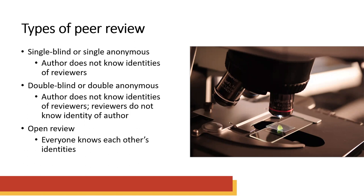The last model we'll mention is open review, which can mean a lot of different things — there doesn't appear to be any consensus on the definition yet. It often refers to a process where the author and reviewer are aware of each other's identities, or it may involve transparent review where reviewer feedback is shared alongside the final published version, or collaborative review among reviewers or between reviewers and authors together. It fosters cooperation and support, which can be great for newer scholars. Reviewers might be more thorough since their identities are known. However, the openness could reproduce existing power imbalances in academia, and reviewers may choose not to engage to avoid having their names attached to negative reviews.